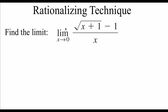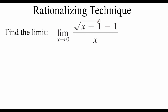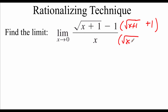Next example: the limit of the square root of x plus 1 minus 1 over x as x approaches 0. Trying direct substitution gives the square root of 0 plus 1 minus 1 all over 0 — again indeterminate form 0 over 0. So we'll use a technique called rationalizing, which involves using a conjugate. The conjugate of the numerator is the square root of x plus 1 plus 1, changing the sign. We multiply by that conjugate on both top and bottom.